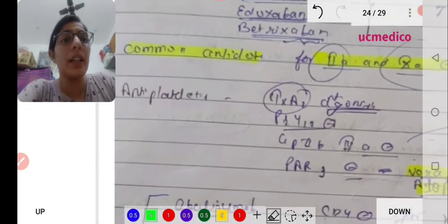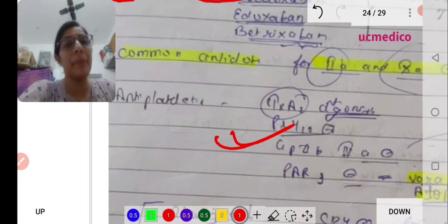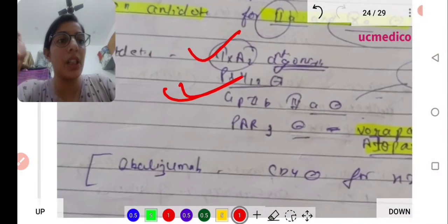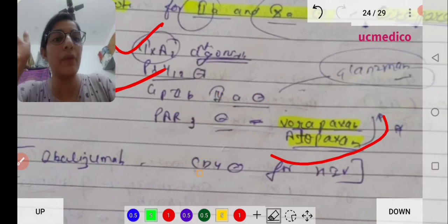Antiplatelet drugs - we already did this. P2Y12 inhibitors, thromboxane A2 antagonists, GP2b3a inhibitors. You have to remember the drug names and mechanism of action.